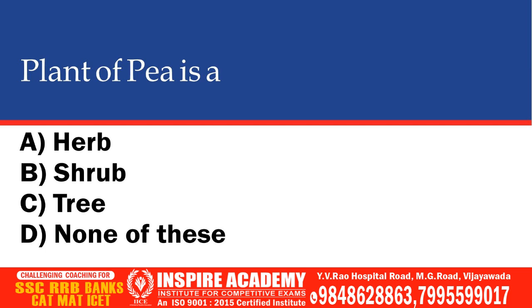Plant of pea is which type of plant? Options: Herb, Shrub, Tree, None of these. The correct option is Herb.